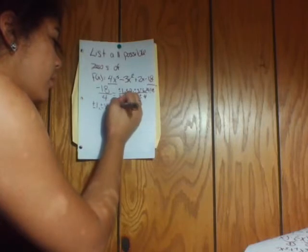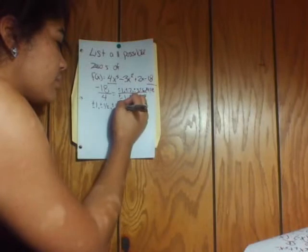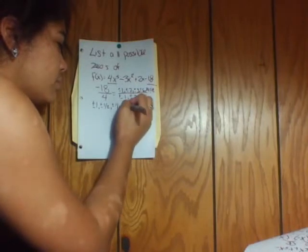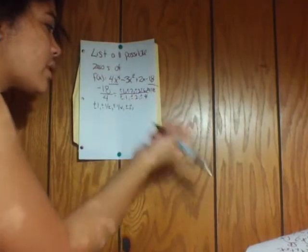And then it would be plus or minus 2, and then if you do 2 over 4, it's going to be 1/2 again.